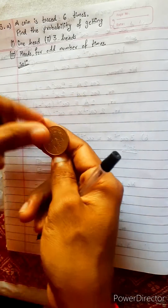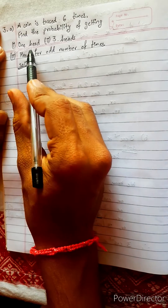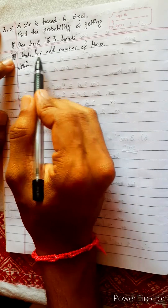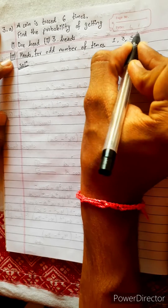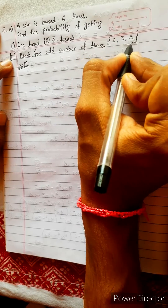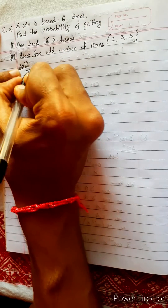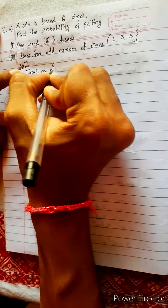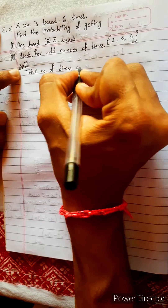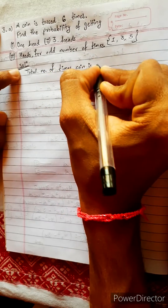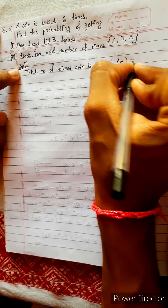A coin is tossed six times. This is how you toss a coin — six times. To toss a coin, one, two, three, four, five, or all number of times — either one, three, or five. The total number of times an experiment is repeated, or a coin is tossed, is represented by small n equals to six.